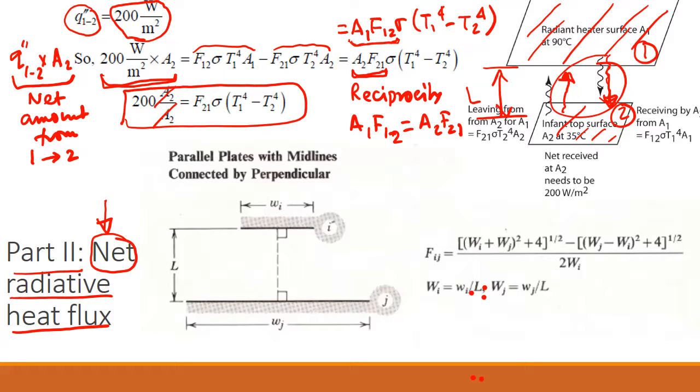The next thing is we need to find what is F21. What we have been given is view factor, which is what F21 is, a view factor between two parallel plates where the midlines are connected by a perpendicular. These are infinite parallel plates, and this is the midline, which is the appropriate one for this case because that's what we are approximating it to.